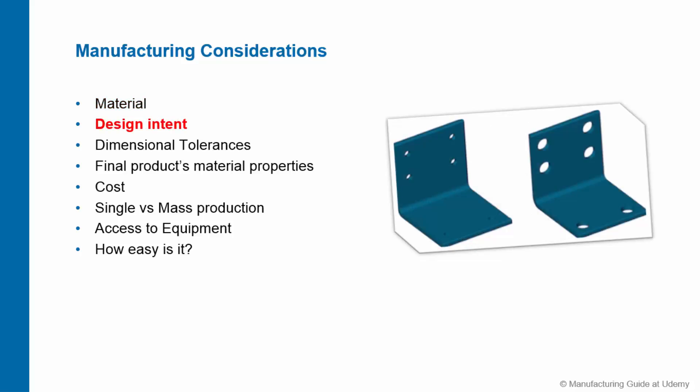Design Intent: What is your objective behind the product? Is the product supposed to be lightweight? Then you should think about using plastics and plastic manufacturing methods. Is the product supposed to have one hole or 50 holes? If it has 50 holes then you should use CNC machining rather than manual machining because it will be much faster that way.